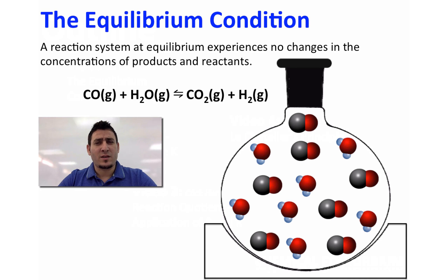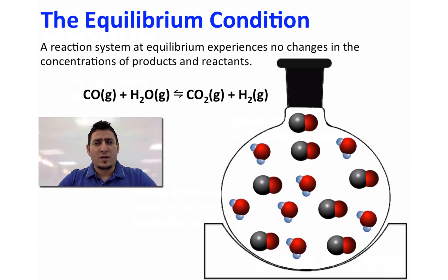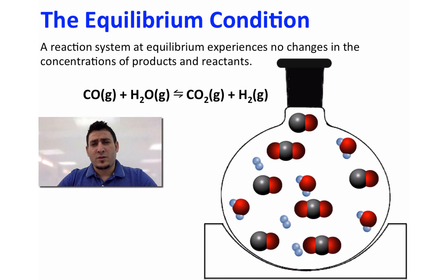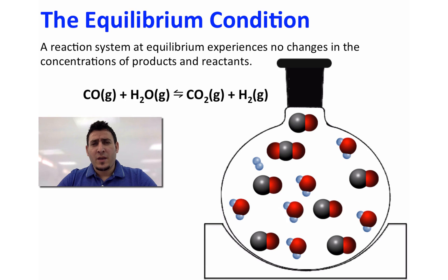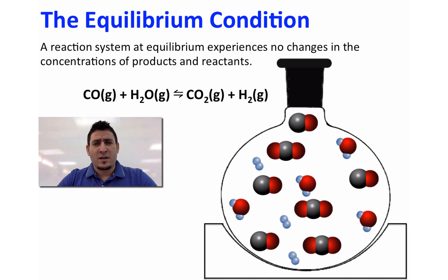A system is said to be at equilibrium when the concentrations of the reactants and the products do not change over time. Let's discuss the example of the reaction between carbon monoxide and water to give carbon dioxide and hydrogen. Every time carbon monoxide reacts with water to give carbon dioxide and hydrogen, also hydrogen can react with carbon dioxide to give back water and carbon monoxide.